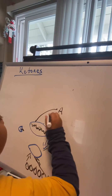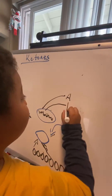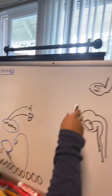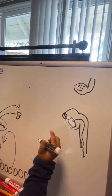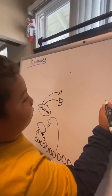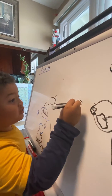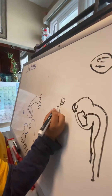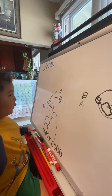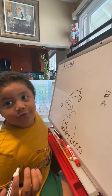Acetoacetate and beta-hydroxybutyrate. Then you go to the muscle or the brain. Beta-hydroxybutyrate first, and acetoacetate. When you go to the muscle, there's not enough room.